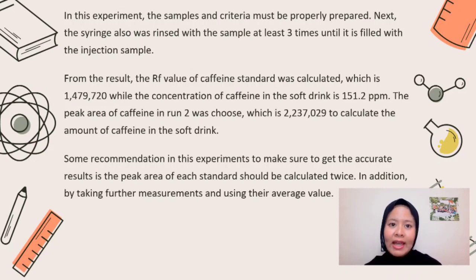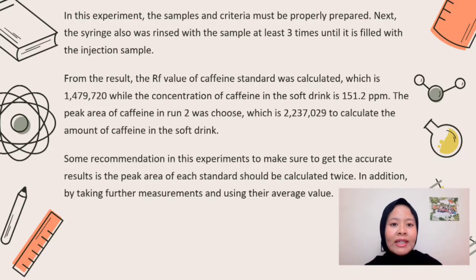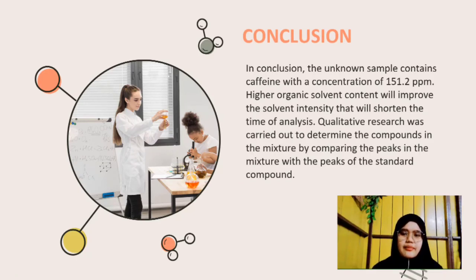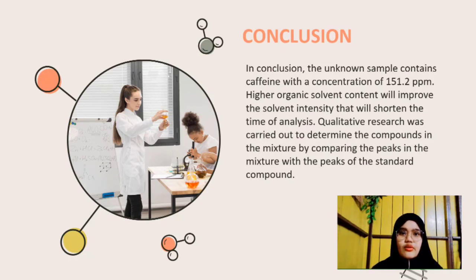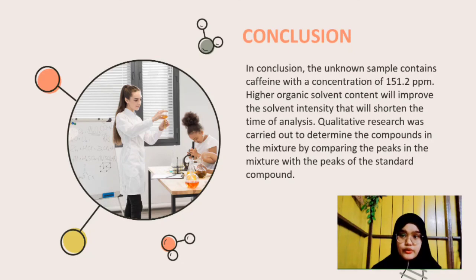Some recommendations in this experiment to ensure accurate results: the peak area of each standard should be calculated twice. This helps the estimation of the average peak area and eliminates random error. In addition, by taking further measurements and using their average value, better precision can be assured. In conclusion, the unknown sample contains caffeine with a concentration of 151.2 ppm. Higher organic solvent content will improve solvent strength and shorten the analysis time. Qualitative analysis was carried out to determine the compounds in the mixture by comparing the peaks in the mixture with the peaks of the standard compound. This slide shows the references for the high performance liquid chromatography experiment.